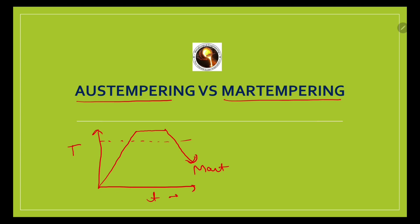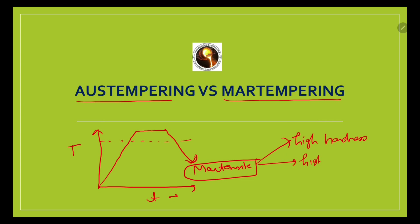Through this rapid cooling, we achieve a martensite structure. This martensite has high hardness, but at the same time it shows high brittleness and higher residual stresses. These are the key outcomes of conventional hardening treatment.